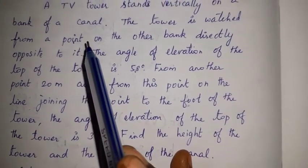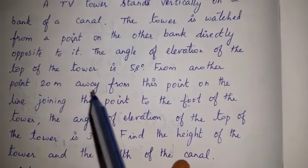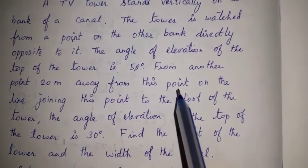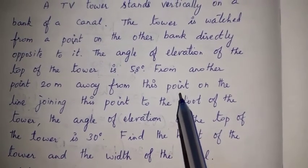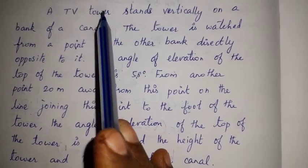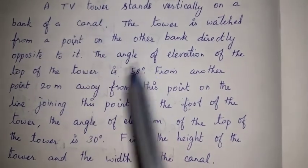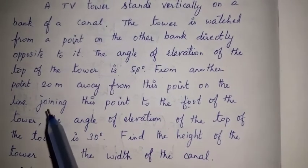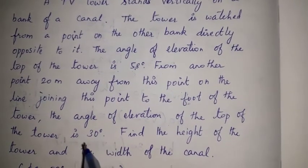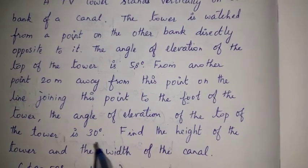From this point, 20 meters further along the line to the foot of the tower, there is another point. From that point, the angle of elevation of the top of the tower is 30 degrees.